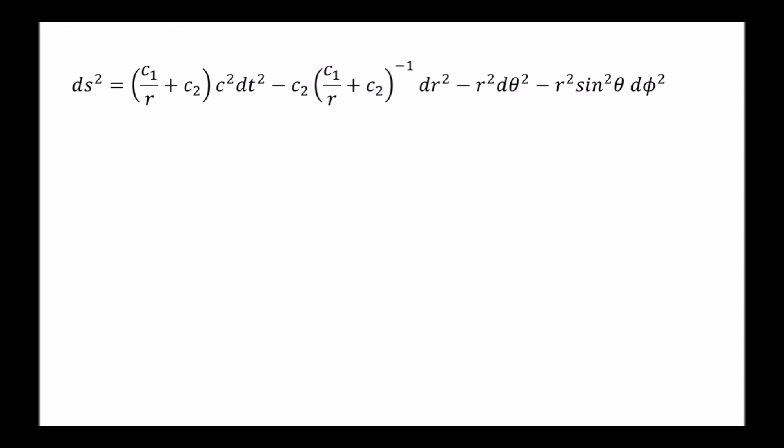But what about C1 and C2? Well, we can work out C2 from the condition that as R goes to infinity, the metric must converge to the flat spacetime metric. This is possible only if C2 is 1.